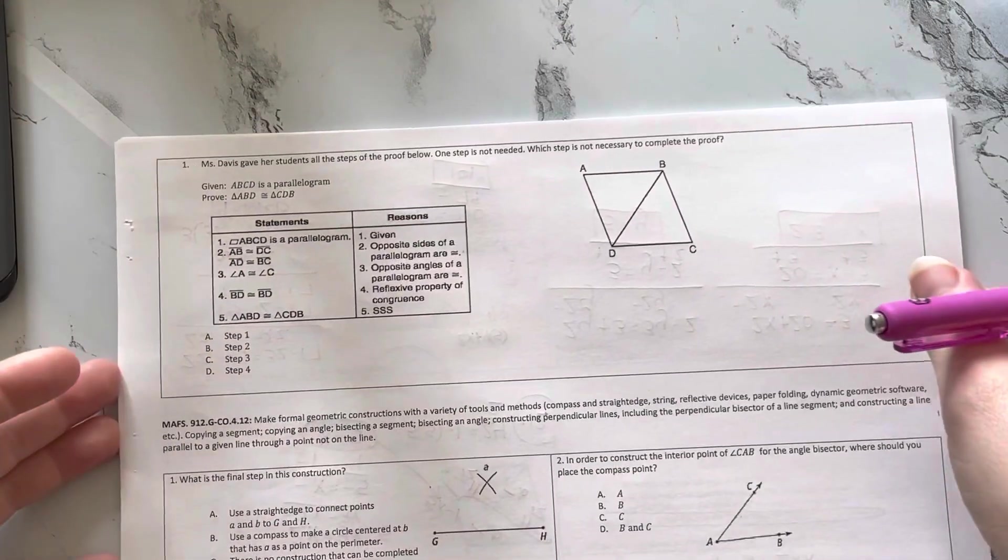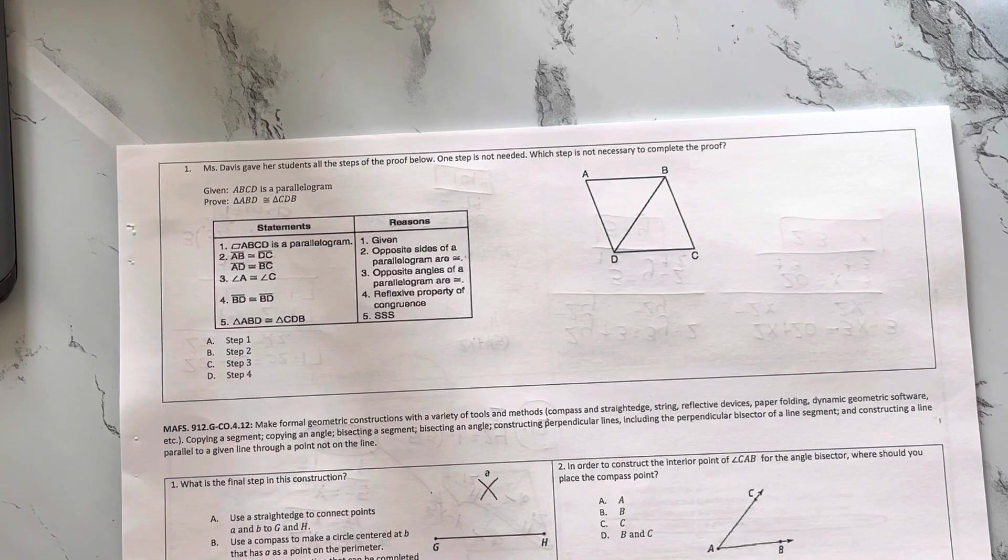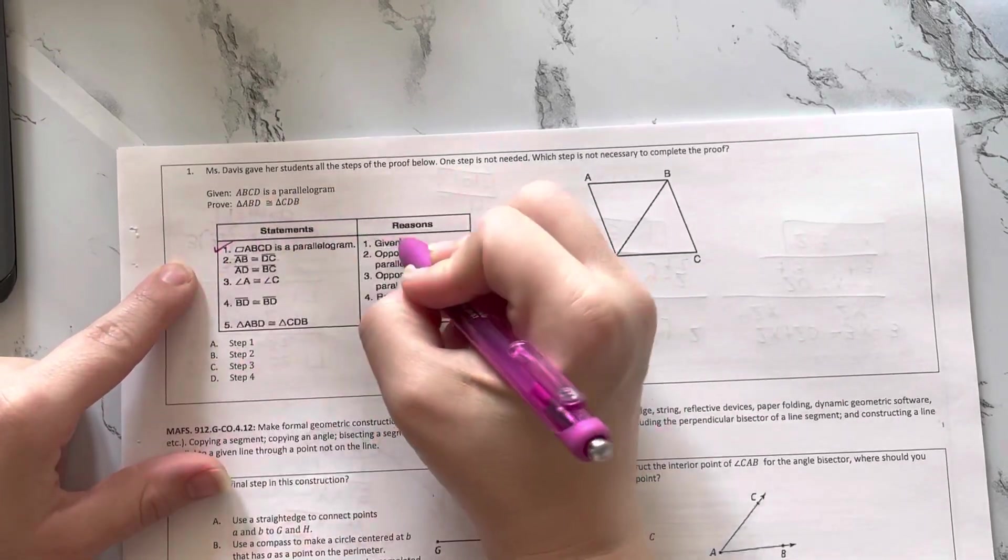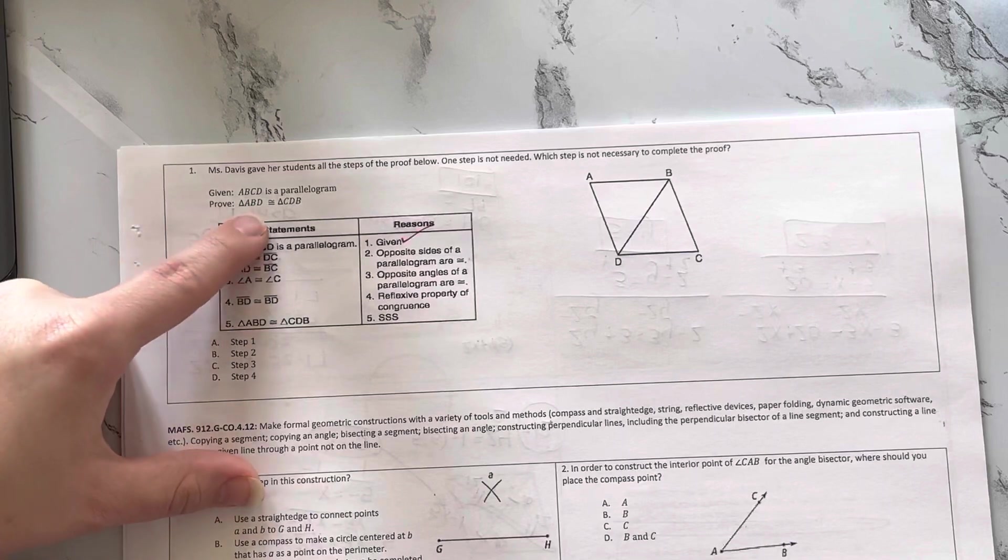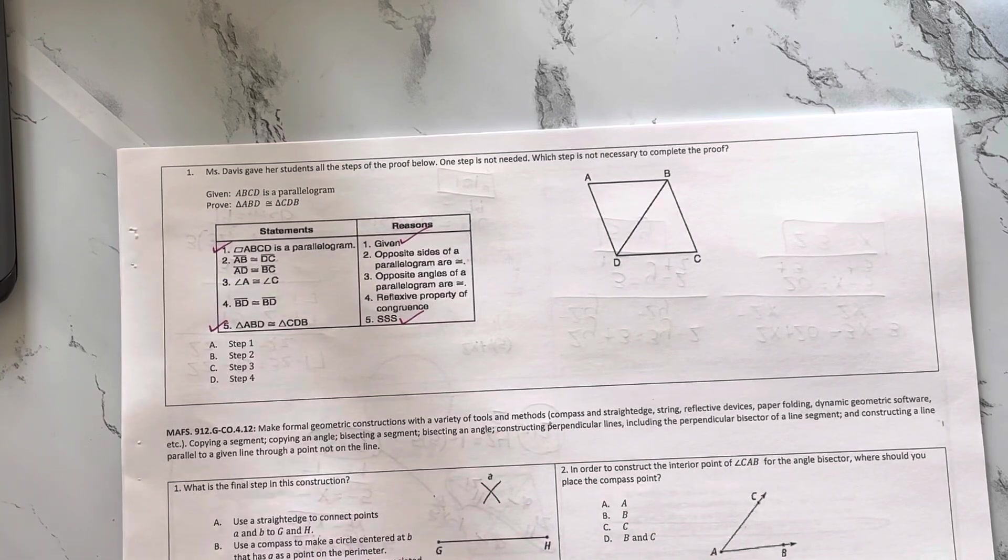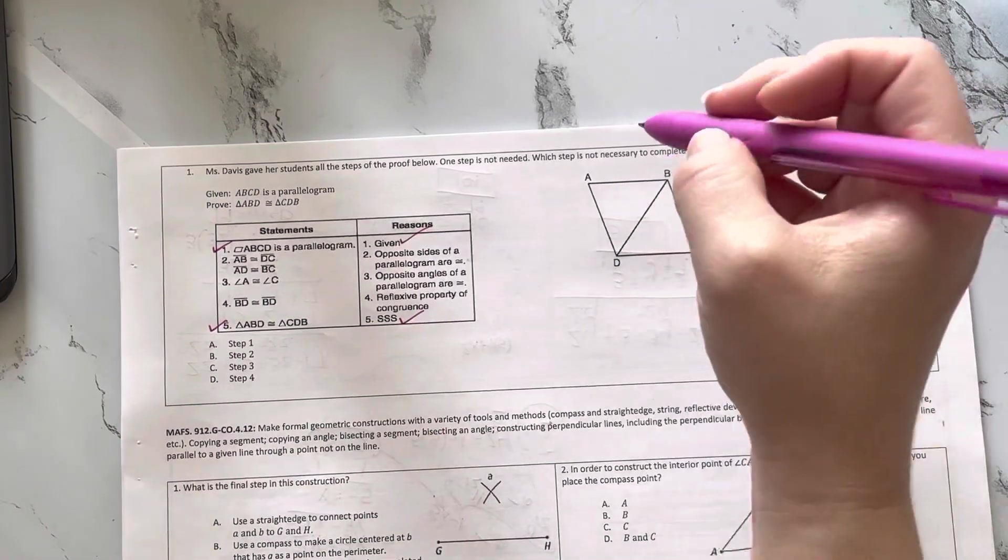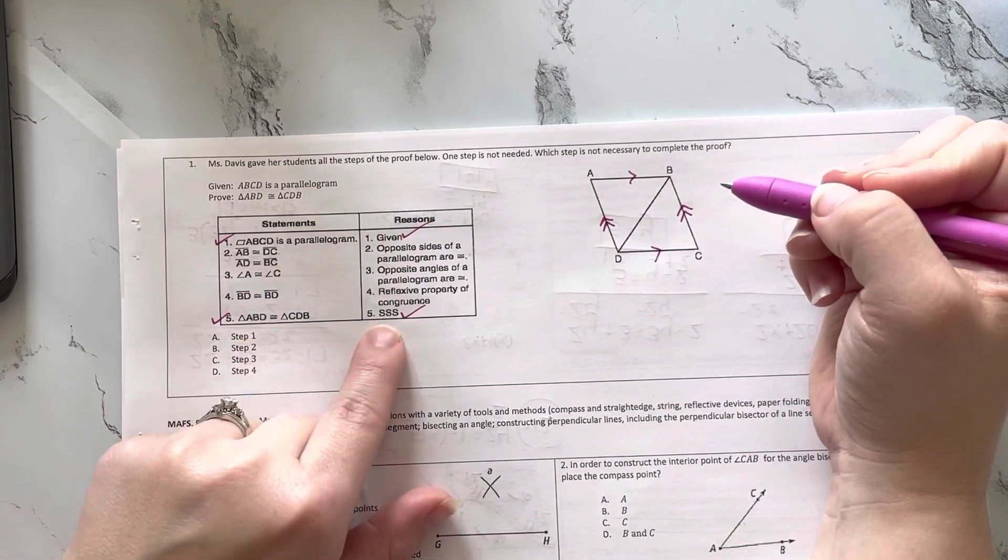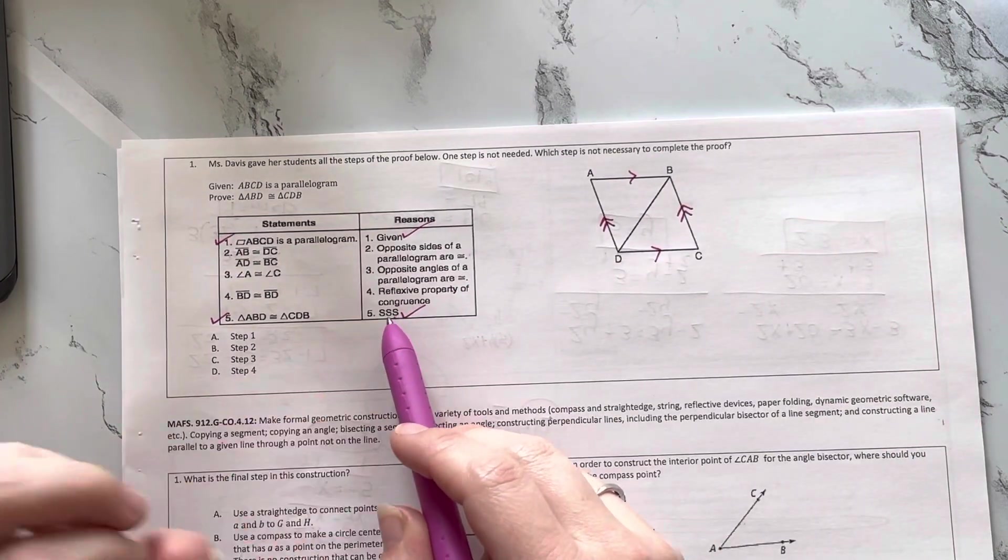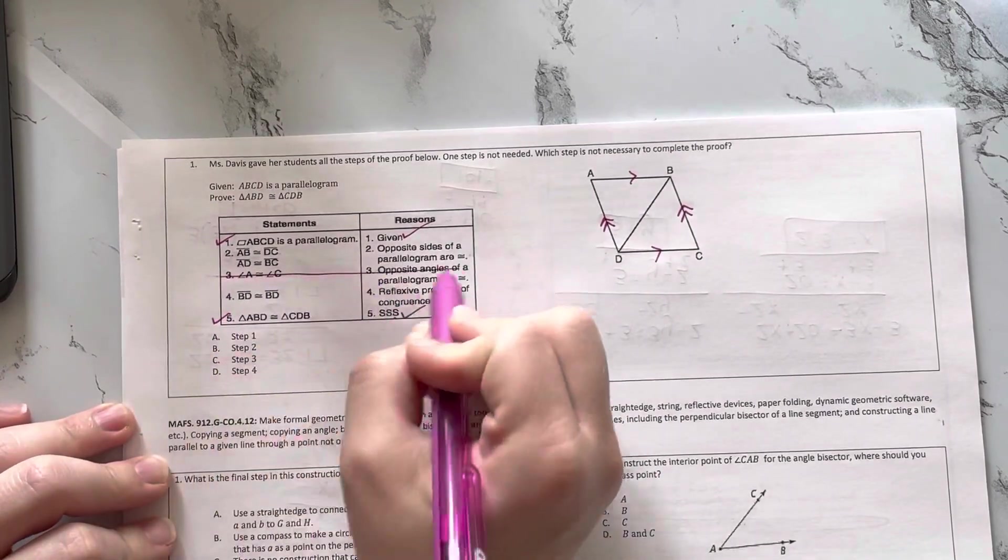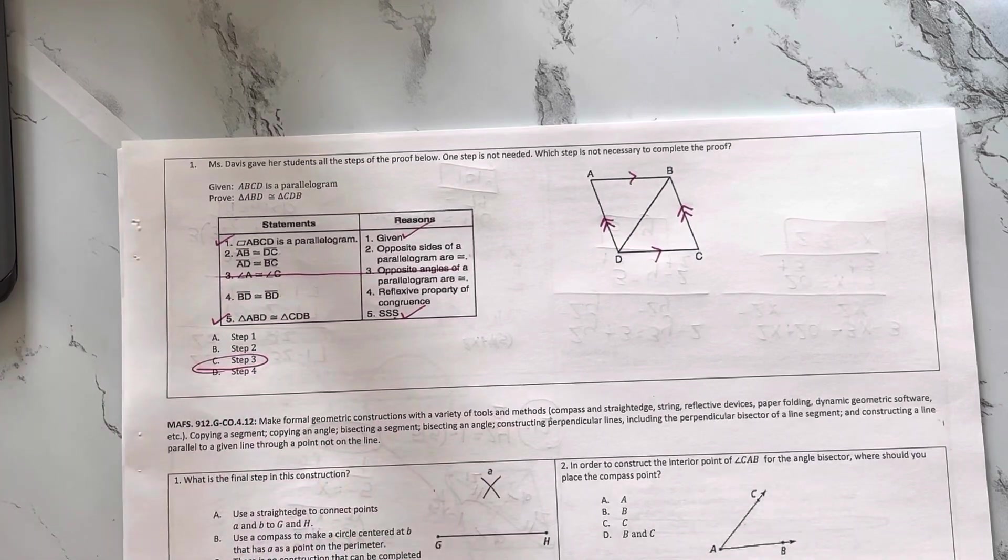Alright, let's see. Mrs. Davis gave her students all the steps of the proof below. One step is not needed. Which step is not necessary to complete the proof? Alright, so let's see. I have a parallelogram. Well, I need to use that because that's what's given to me. And I need what I'm trying to prove, definitely necessary. So let's see, if it's a parallelogram, we know that the sides are parallel. And it says that they use side, side, side. That's a side, that's a side, that's a side. This is an angle, I didn't even use that. So step 3, actually, is the one that I don't need.